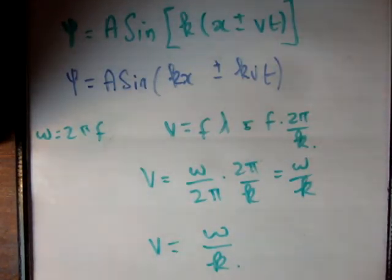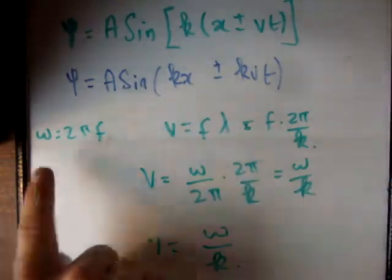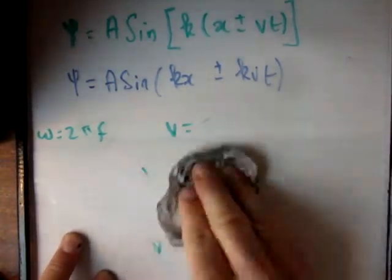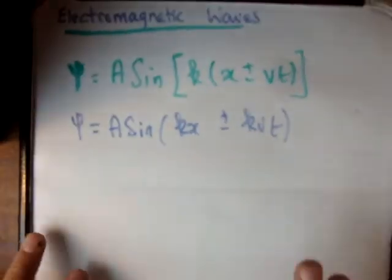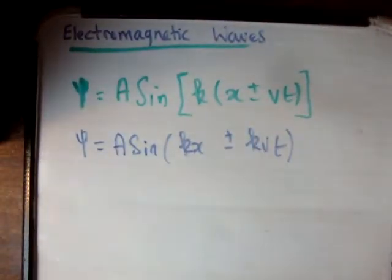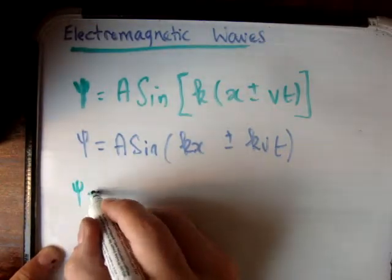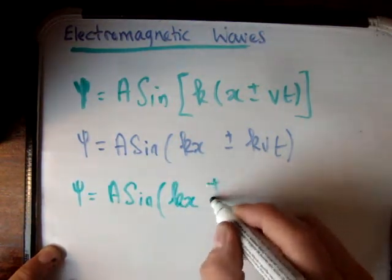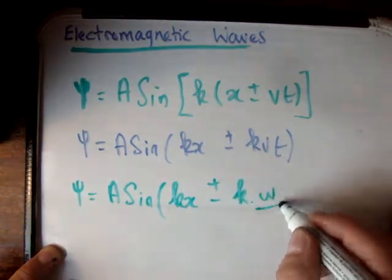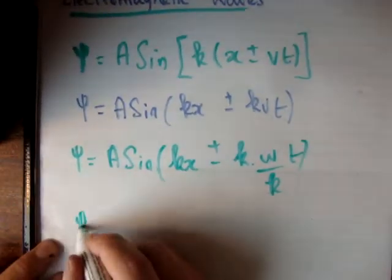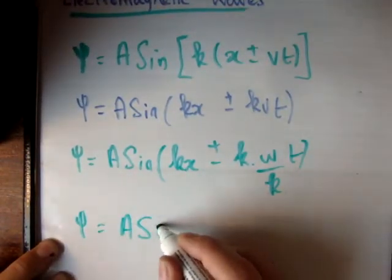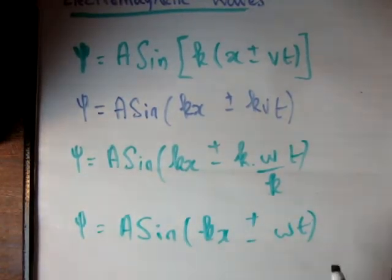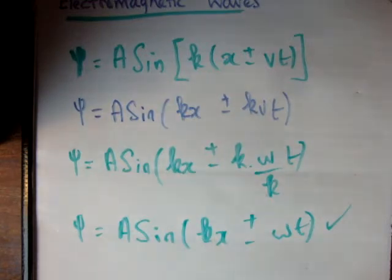That's a manipulation you need to know. Let's apply this: since v equals omega over k, the term kvt becomes k times (omega/k) times t, which equals omega times t. Therefore psi equals A times the sine of (kx ± ωt). That's the standard form in which you usually see the wave equation written.